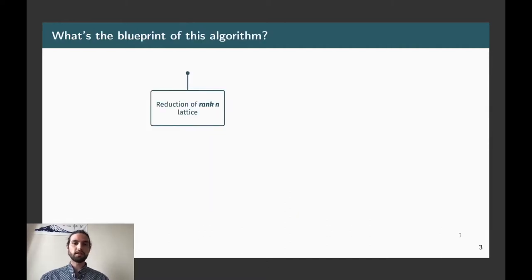So first of all, let's see the blueprint of this algorithm. In particular, what are the basic ideas that are making possible to reduce lattices in polynomial time? So let's suppose that we want to reduce a rank N arbitrary lattice. So the first thing we're going to do is to compute the QR decomposition or equivalently to find the Gram-Schmidt vectors associated to the input basis, which somehow encodes the defect of orthogonality that the input basis vectors are. This is a polynomial time computation.